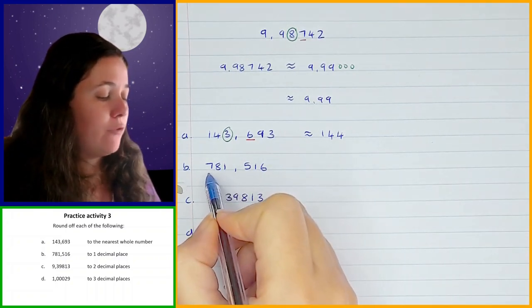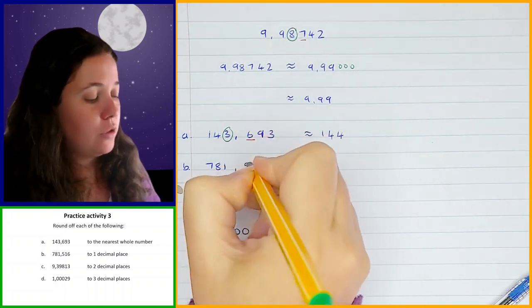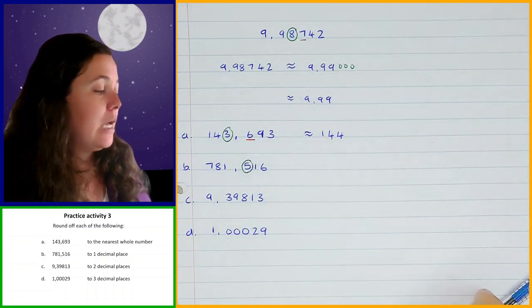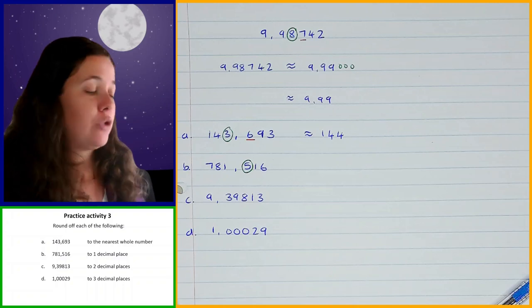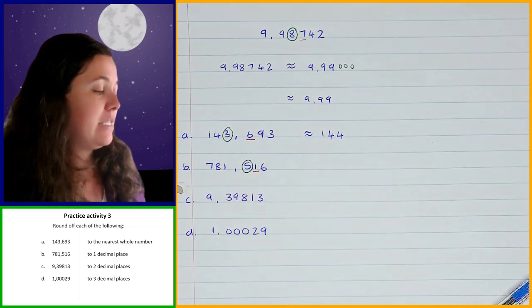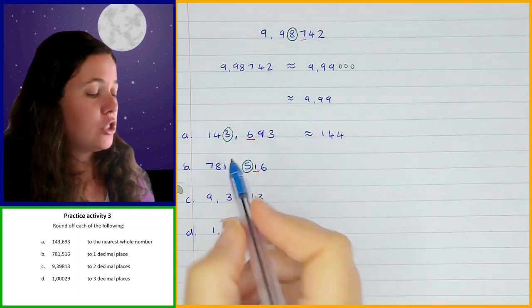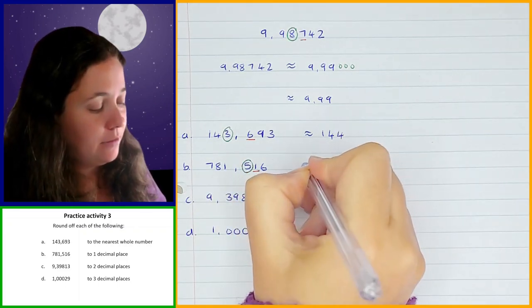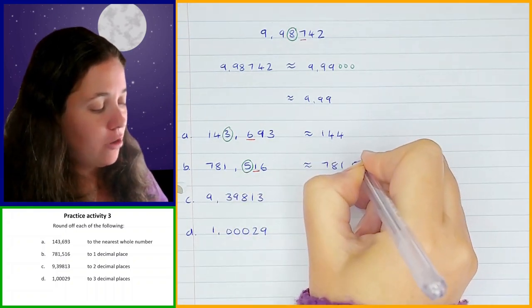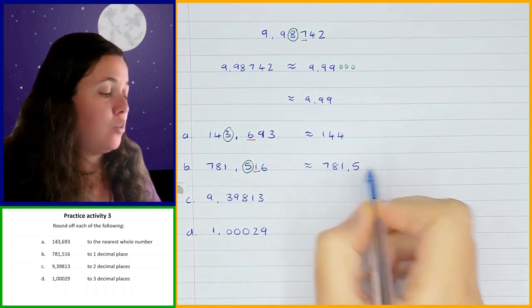The next one: we've got 781.516 and we need to round off to one decimal place. The five is in the first decimal place position. Looking at the digit straight after it — the one — one is in the four or less category, so the five stays the same. Everything after it changes to zeros, but because they're after the decimal point I don't need to write them. So the answer is 781.5.